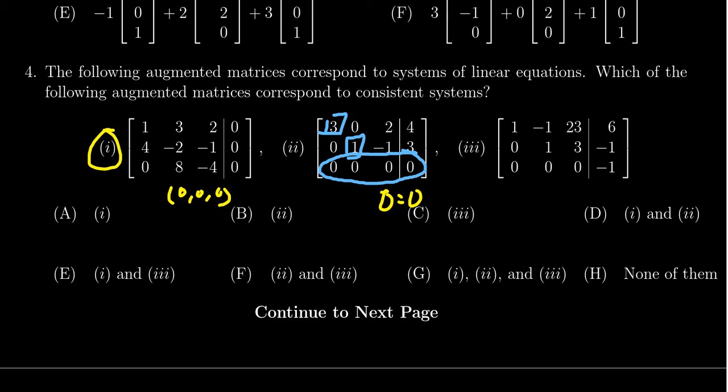But what we can see is that this matrix in echelon form has no contradictions. Therefore, it will be a consistent system. It'll have multiple solutions, but it will be consistent. And so therefore, choice number two is also consistent.